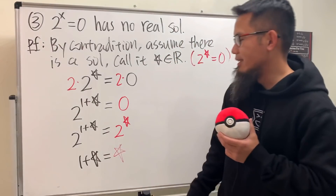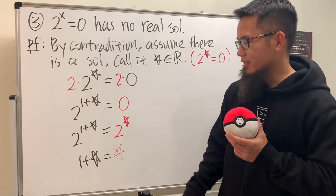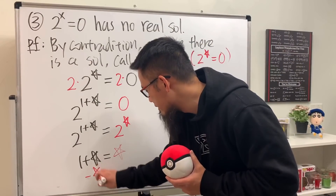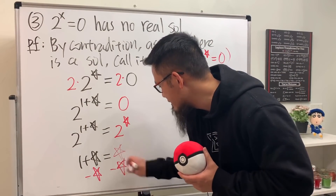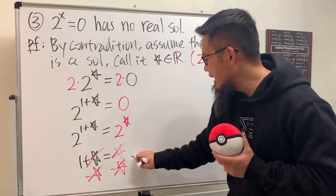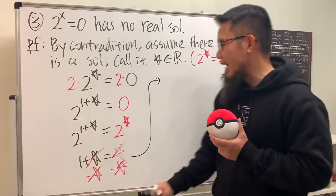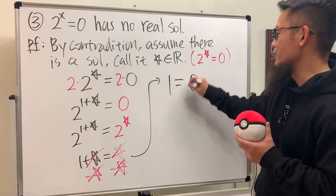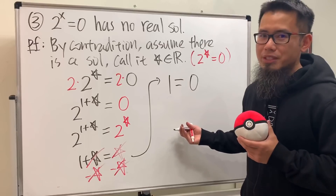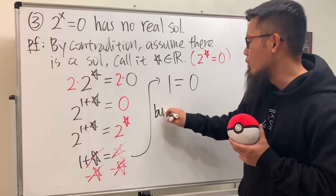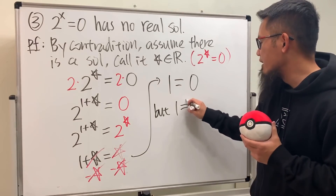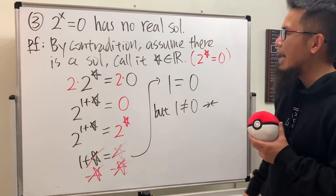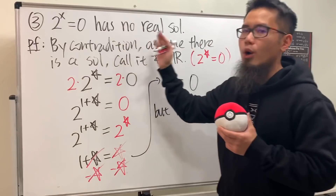Subtract ★ from both sides — those cancel — and we get 1 = 0. We know 1 is definitely not equal to 0. This completes the contradiction proof that 2^x = 0 has no real solutions.